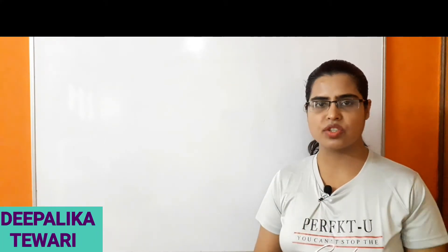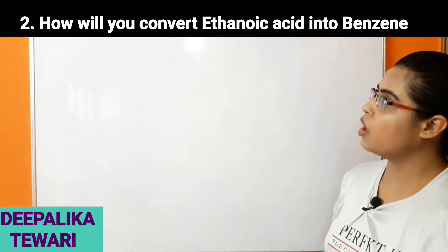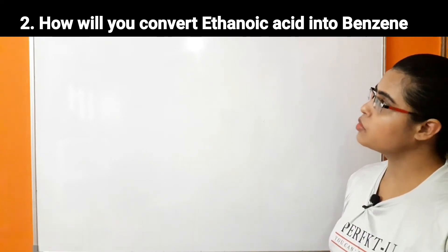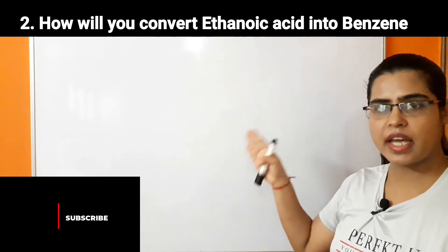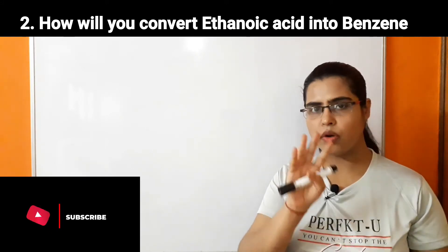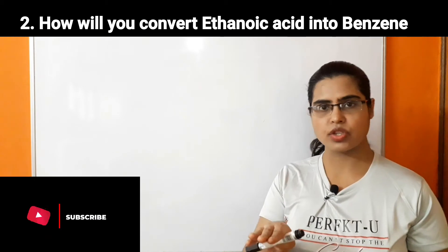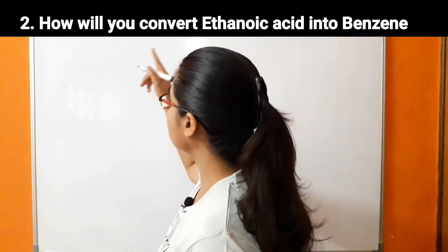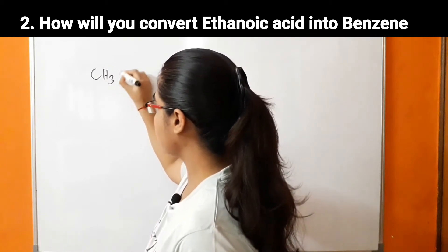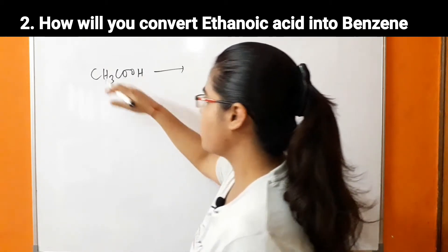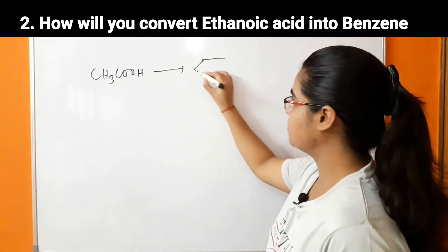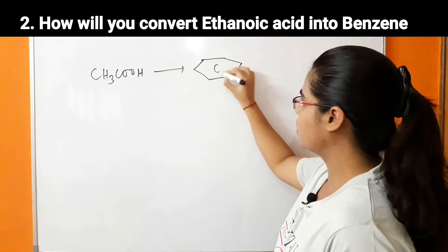Now let's start the second conversion problem. The question is: how will you convert ethanoic acid into benzene? We have to form benzene from ethanoic acid, that is CH₃COOH. First of all, write all the compounds given in the question. The starting material is acetic acid, CH₃COOH, and we have to convert this acetic acid into benzene.